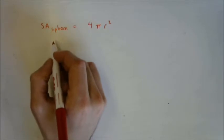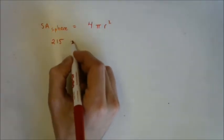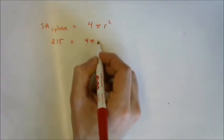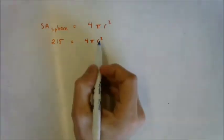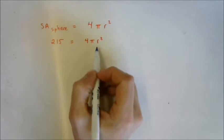215 square centimeters. We don't know the radius, so I'll just copy down this side. And now what we need to do is isolate r. We want to solve this thing for r. So what am I going to do to get r by itself?